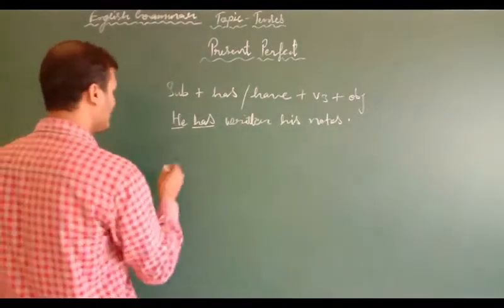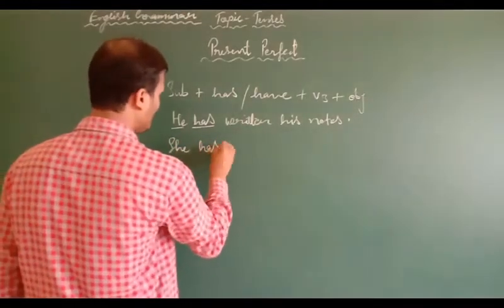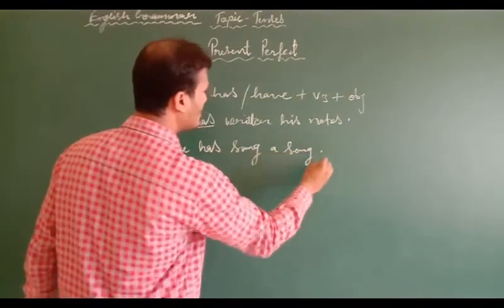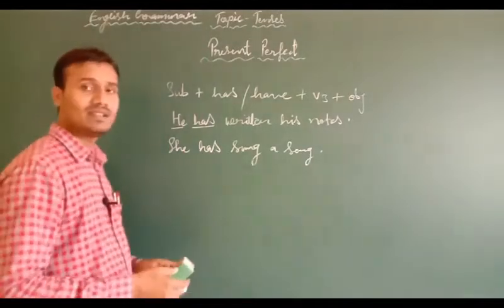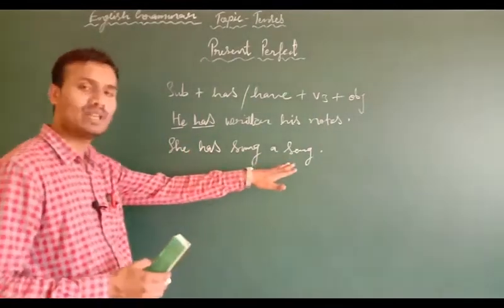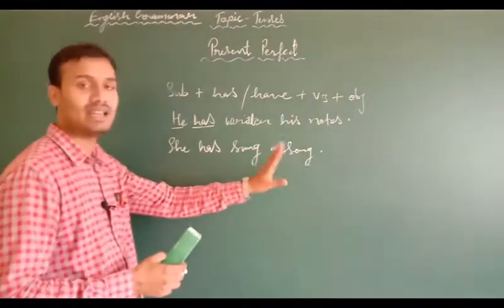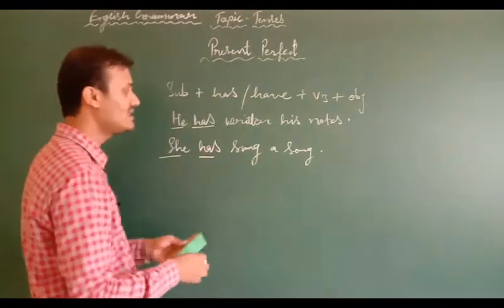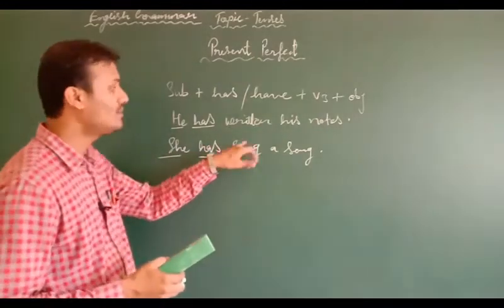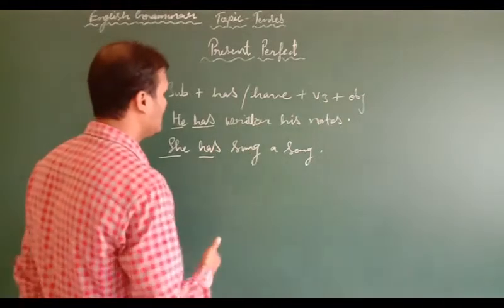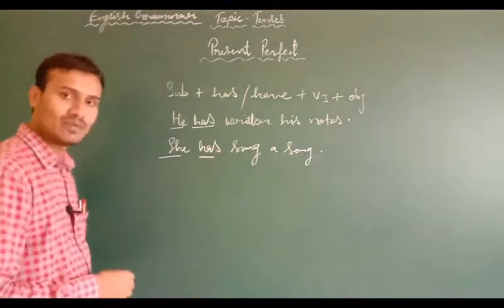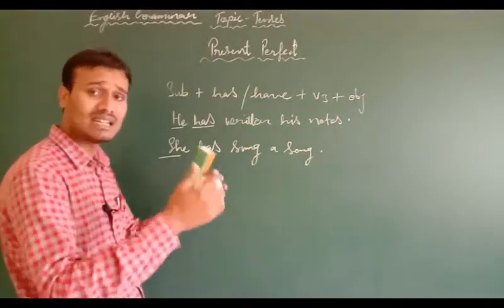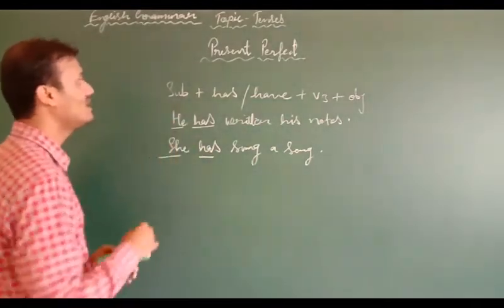Students, let's go through some more examples. 'She has sung a song.' With 'she', you have to use has. The verb will always be in the third form, and then the object will be there. These are sentences of present perfect — to mention some activity which has recently finished, which has recently completed, and for that you are using present perfect.